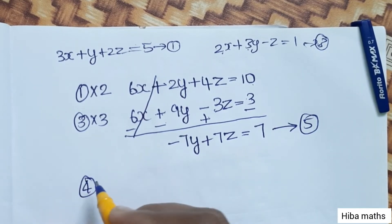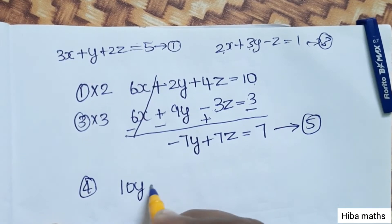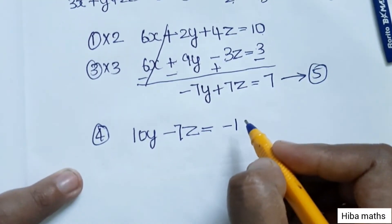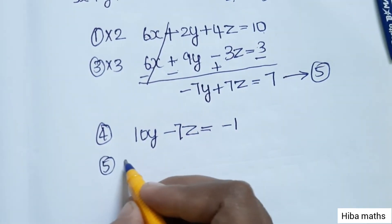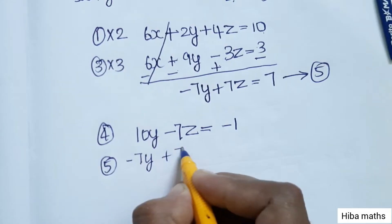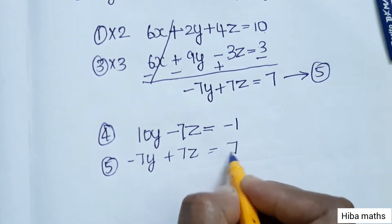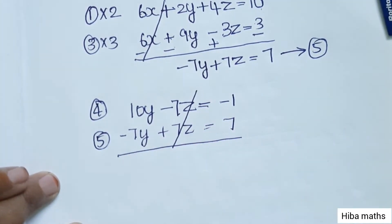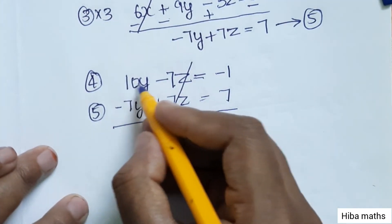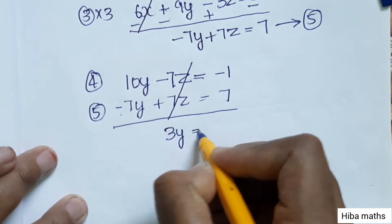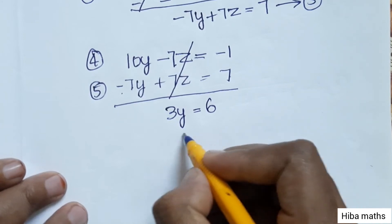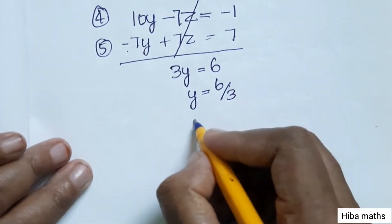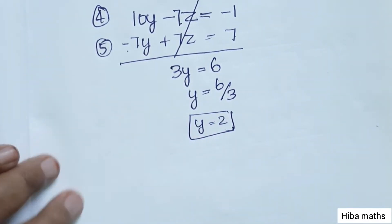Now solve equations 4 and 5. The fourth equation is 10Y - 7Z = -1, and the fifth equation is -7Y + 7Z = 7. Adding them: the Z terms cancel, giving 3Y = 6, so Y = 2.